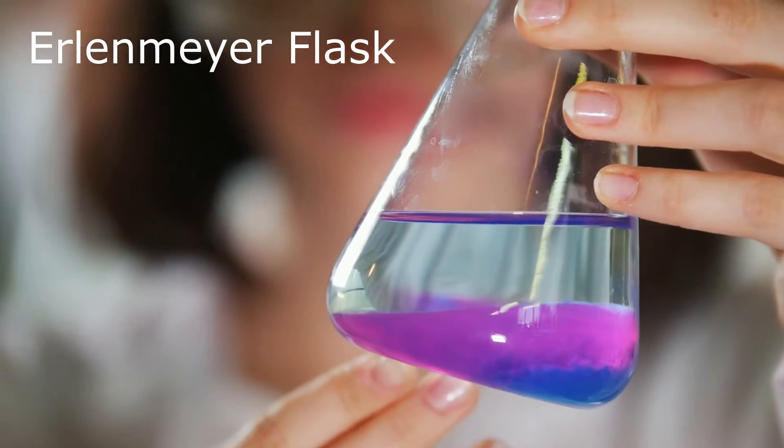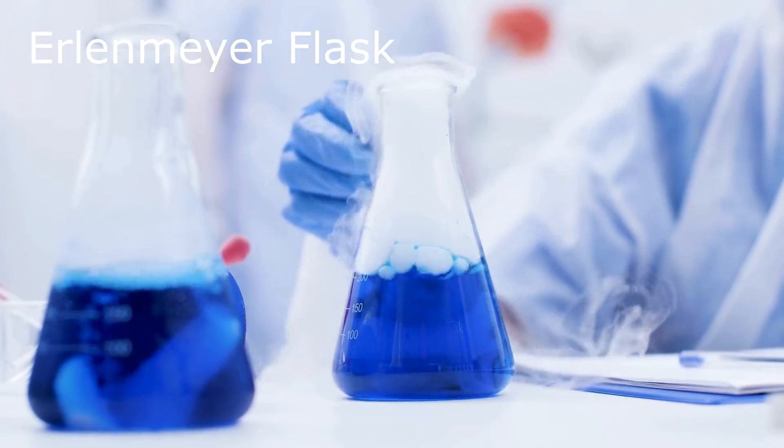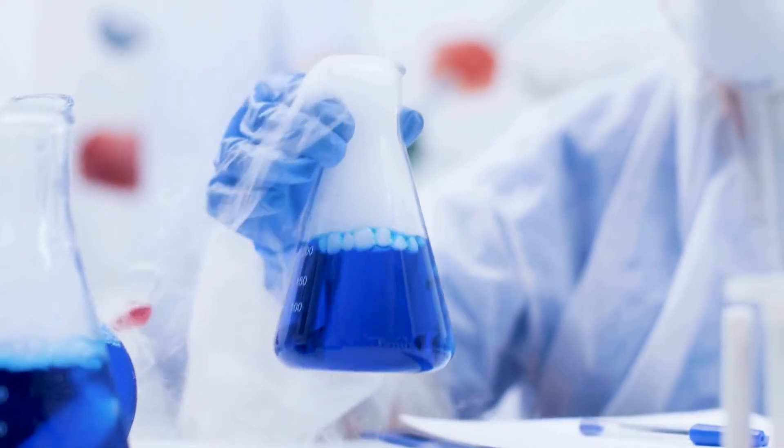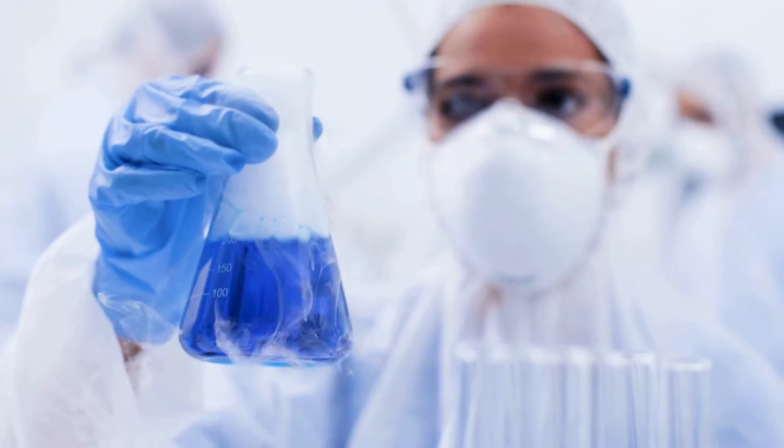Erlenmeyer flasks, also known as conical flasks, are flat-bottom flasks with a wide base and a narrow neck. Their shape makes them ideal for swirling liquids to mix them without the risk of spilling.